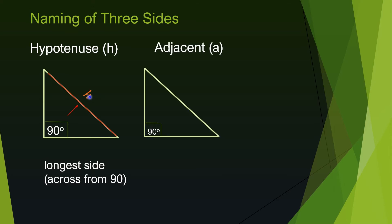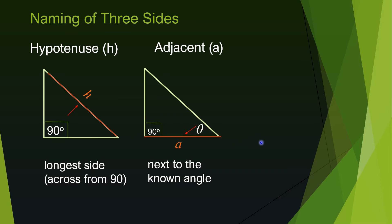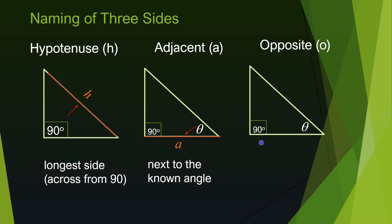The angle of interest in this case is this one here. I'm using the Greek alphabet theta to represent it. After marking the angle of interest, we are ready to name the sides. The side next to the known angle is called adjacent, denoted by lowercase a. The other one is called opposite — for obvious reason — because it is opposite to the angle of interest, across from the known angle.